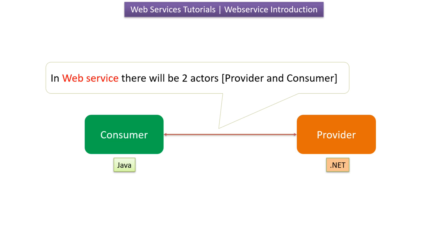Now we will see how it works. The consumer sends a request to the provider. The provider processes the request and sends back the response with the required information, or confirmation that the task is done. For example, imagine you have an app on your phone which acts as a consumer that checks the weather. When you open the app, it sends the request to the weather service, which is nothing but the provider. The service then sends back the weather information to your app. This is how web services work — one application provides a service and another application uses the service.